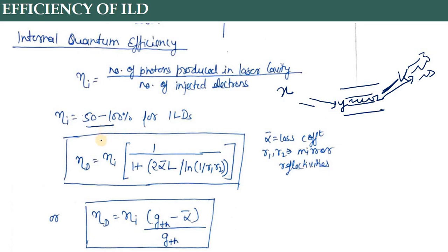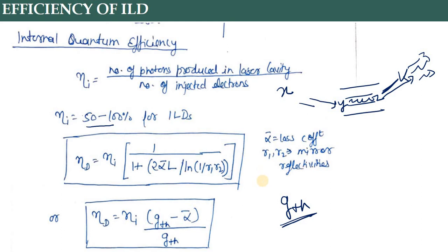We have a relation between ηd and ηi: ηd = ηi × (1 / (1 + 2ᾱL / ln(1/R1R2))), जहाँ ᾱ overall loss है जो पिछले concept में पढ़ा था, L is the length of cavity, R1 and R2 is the mirror reflectivities। यही formula हमने पिछले concept में पढ़ा था जिसके अंदर गth निकाला था - loss और gain जब बराबर हो जाएंगे तभी lasing होगी। Please read the previous lectures - it makes you read this lecture in a comfortable manner।